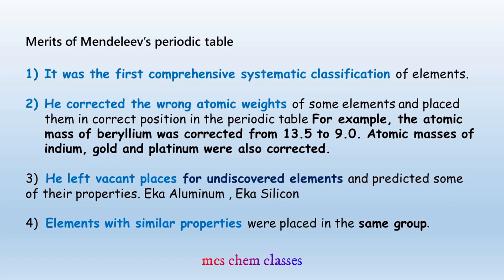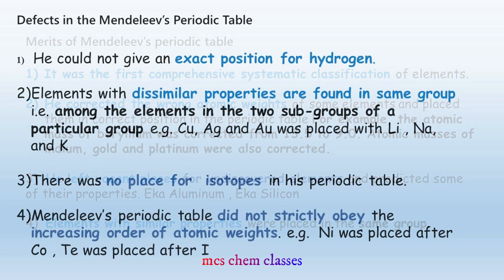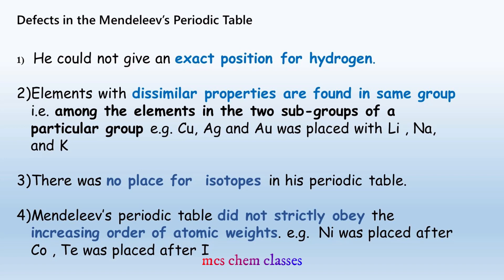Modern long form of Periodic Table. We have to learn more about the group and the period. We are now in the modern Periodic Table, not Mendeleev's. The first defect of Mendeleev's Periodic Table is Hydrogen. Hydrogen shares properties with both Alkali Metals and Halogens. We have to place Hydrogen as a Non-Metal, that is with Halogens.